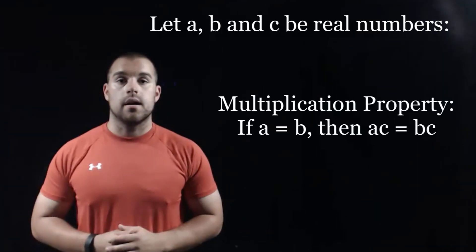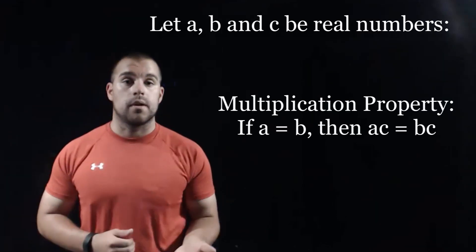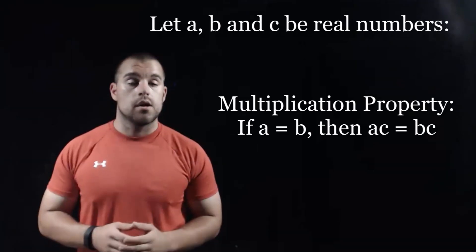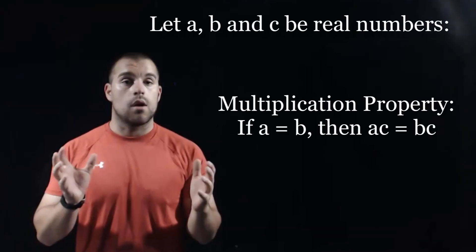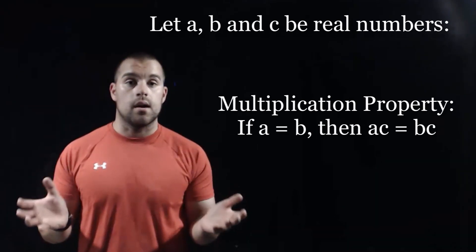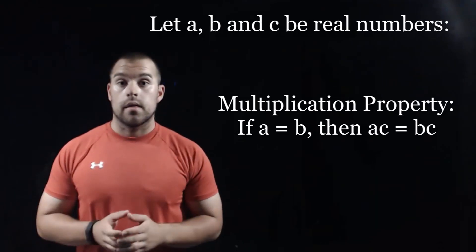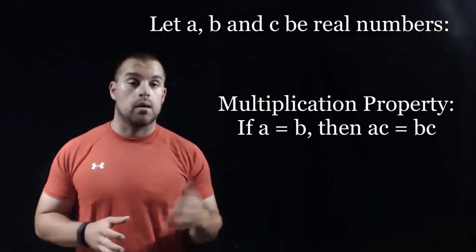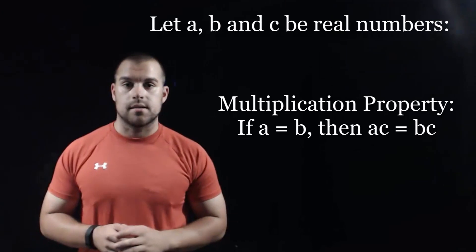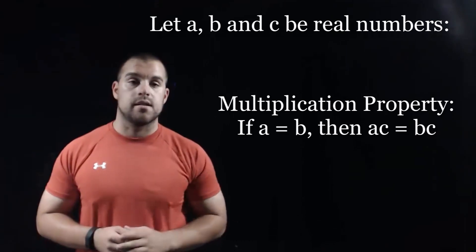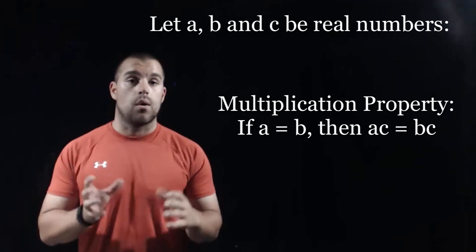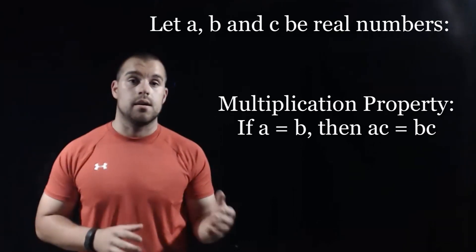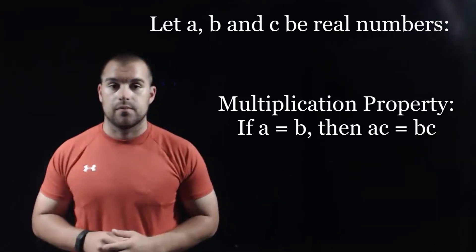Our next property is the multiplication property. Again, we're going to start with if A equals B, then what we can do is multiply by C on both sides of the equation. So A times C equals B times C.